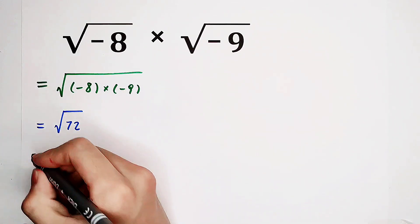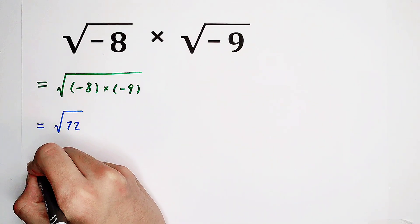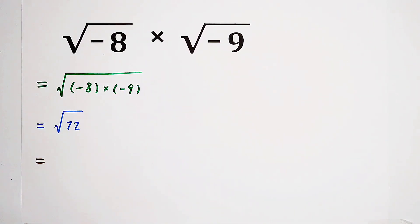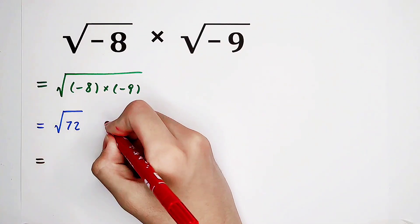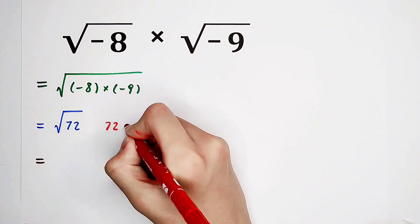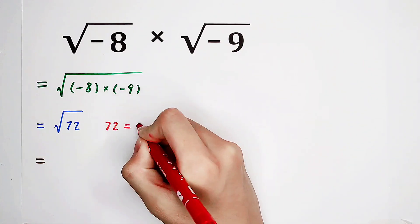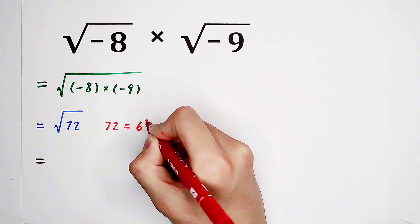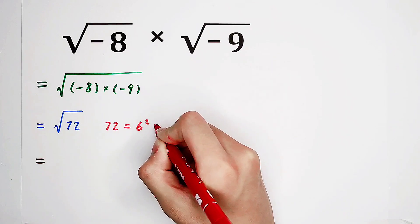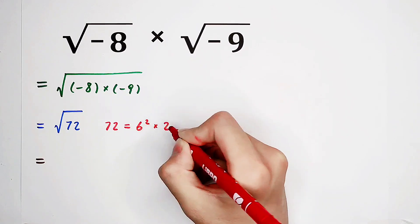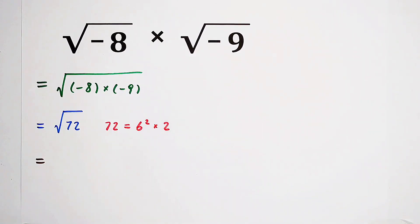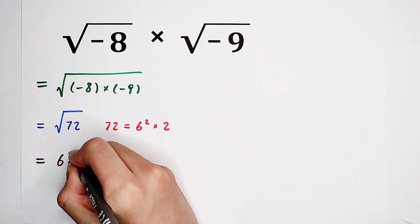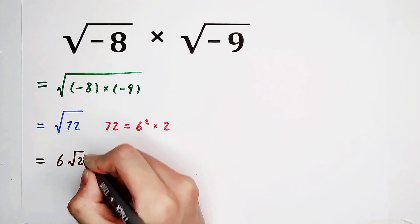Then we know that 72 can be written as 6 squared times 2. So it is just 6 times square root of 2.